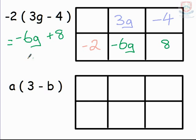To tidy this up a little bit you can reverse that and just have 8 take away 6g. But either is an acceptable answer.